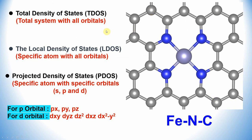There are three types of density of states. The first one is the total density of state — that means the total system with all orbitals. The second is the local density of state, LDOS — this is a specific atom with all orbitals, so if you want only the Fe atom you can select it with all orbitals. The third one is projected density of state, PDOS — this is a specific atom with specific orbitals such as s, p, and d orbitals.